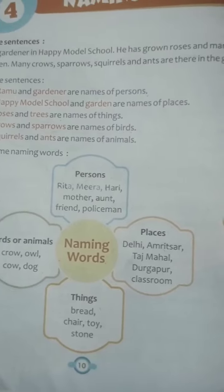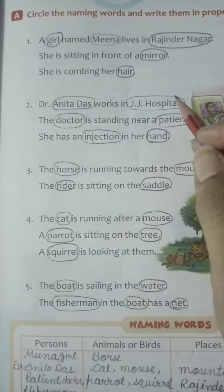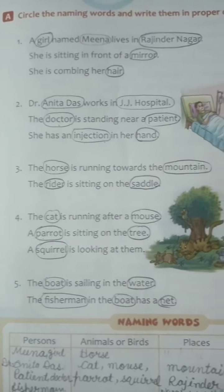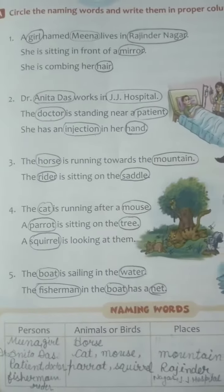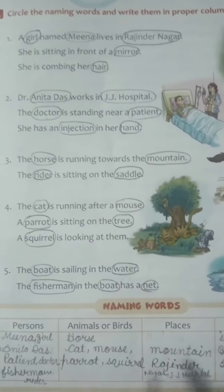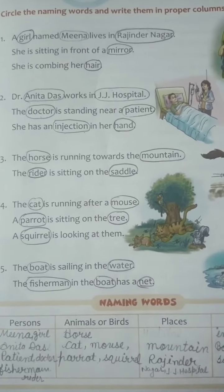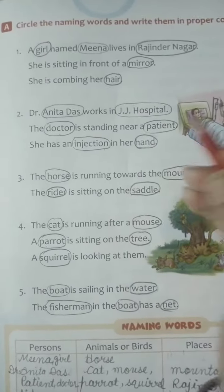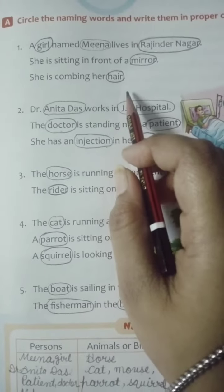Ok students, naming words is clear. Now, in part A, circle the naming words and write them in the proper columns. Here are four columns: persons, animals or birds, places, and things. Firstly, we will circle the naming words.